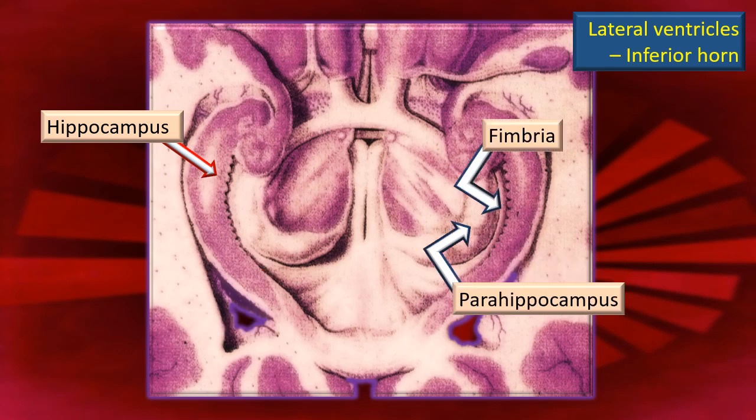Next, the fimbria traced forwards gives a better view, and there is a small gyrus more medial to it — that is the parahippocampal gyrus. Remember, this parahippocampal gyrus is not a part of the inferior horn. It is just a relevant point noted in the photograph; it does not form any component of the inferior horn.